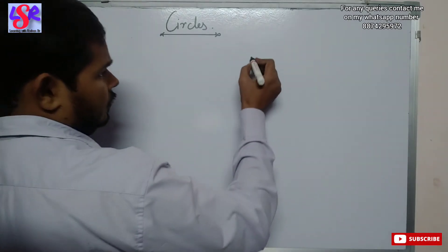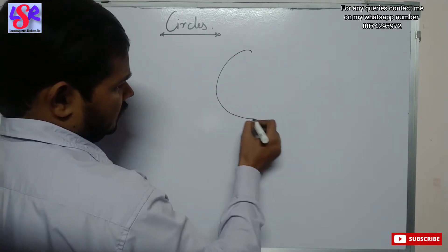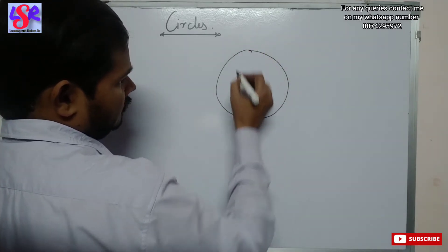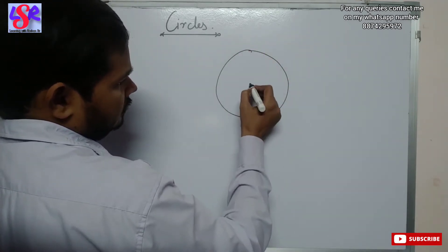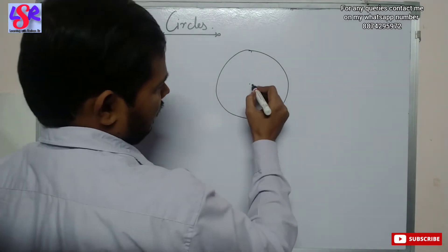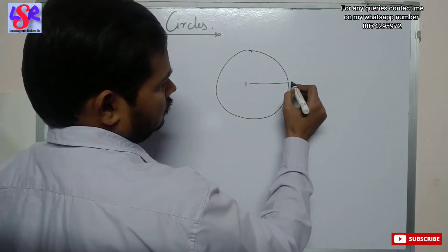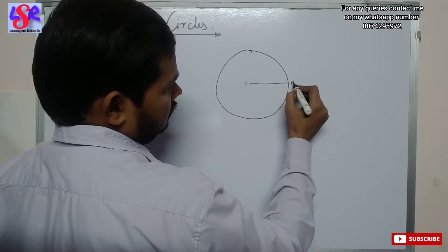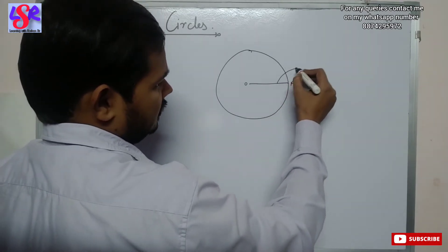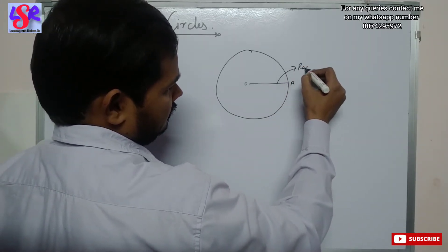Hello everyone. We are going to start with a new topic, that is circles. First of all, we are going to learn the basic things of the circle. This is the center of the circle, and the line which joins the center to a point on the circle is known as the radius of the circle.